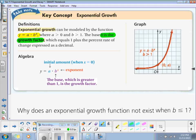b is the growth factor, and the growth factor equals 1 plus the percent rate of change expressed as a decimal. This is what the growth rate is.